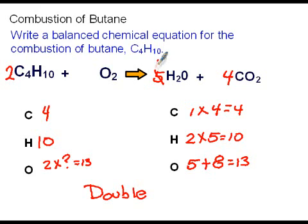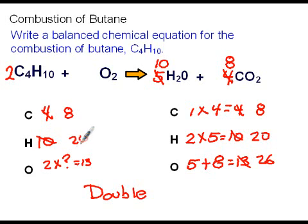So here's how we do it. We put a two out in front of the butane. We change that five to a ten for water and change the four to an eight for carbon dioxide. That gives us 26 oxygens on the right hand side. So what number goes out in front of the oxygens on the left hand side? Two times 13 is 26.